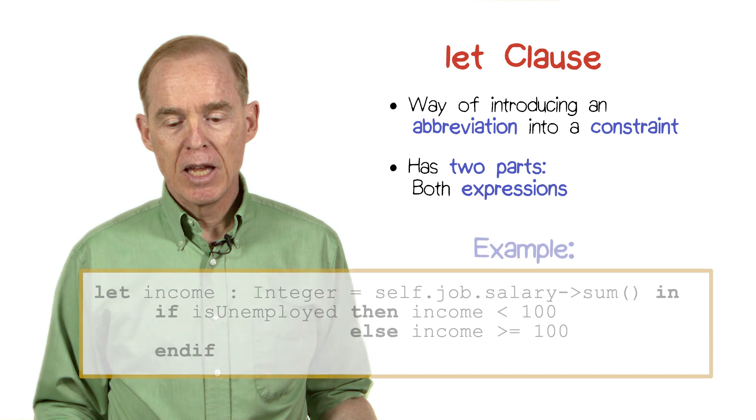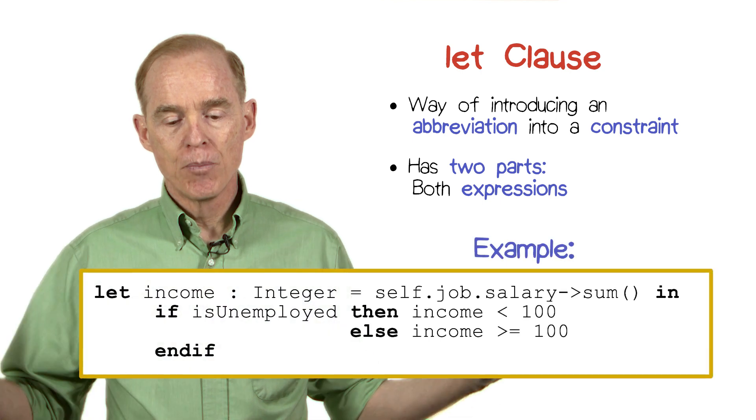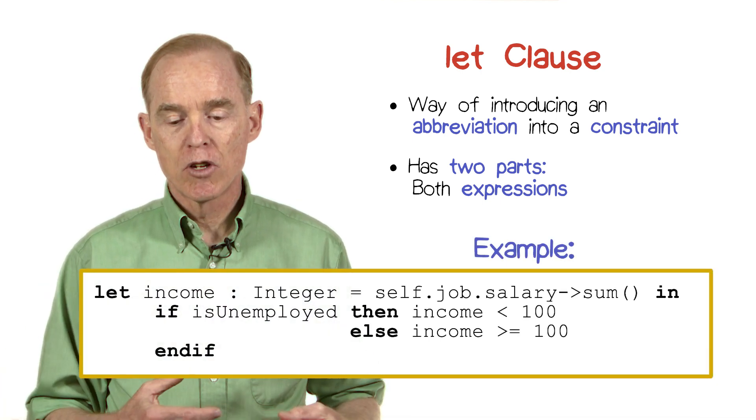For example, if our income is expressed in terms of the sum of our salaries for all of our jobs, we could use a let clause which says exactly that. We could introduce a new variable or identifier called income.